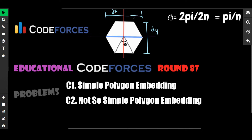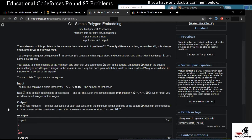Hi, this is Mr. Sikoder. In this video we are going to look at Educational Codeforces Round 87, problem C1 and C2. The problem C1 is named 'Simple Polygon Embedding' and C2 is named 'Not So Simple Polygon Embedding'. The only difference between these two is whether n is odd or even.